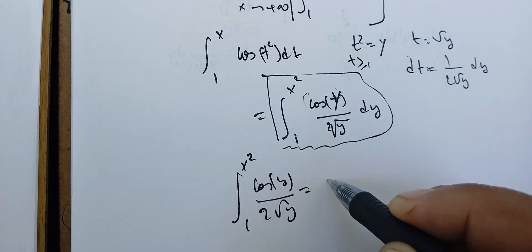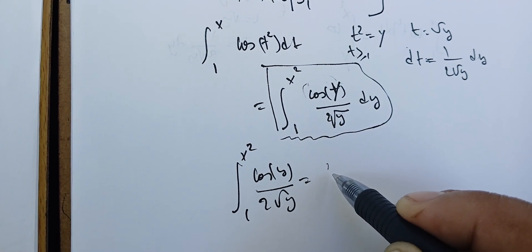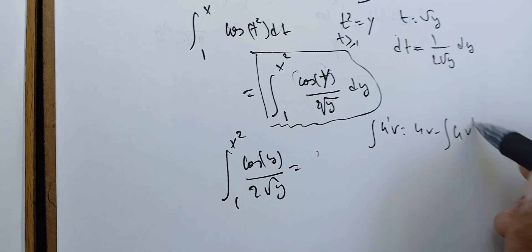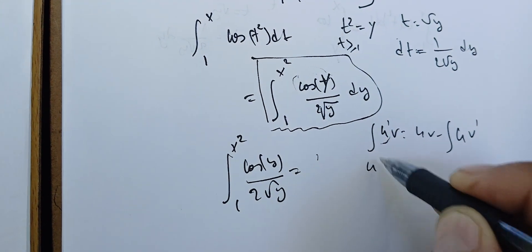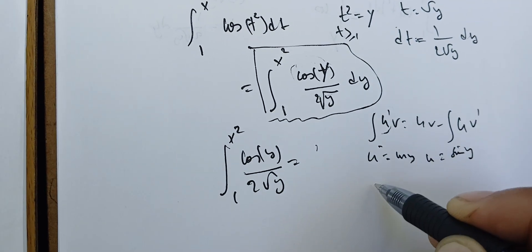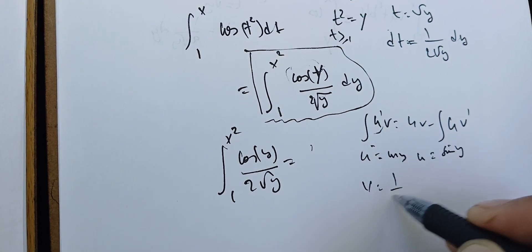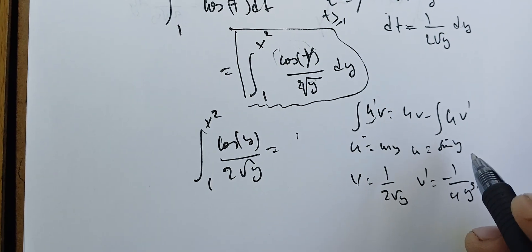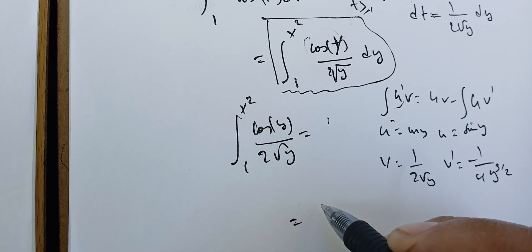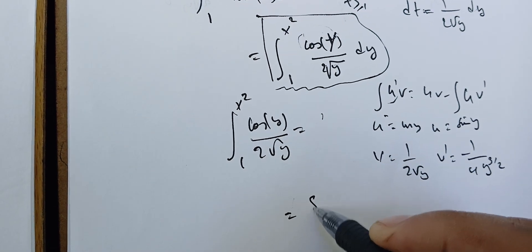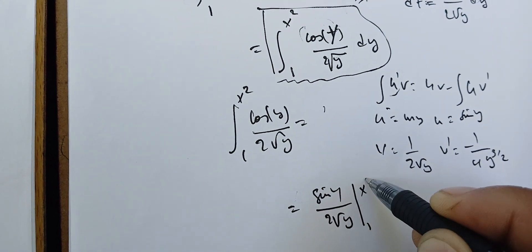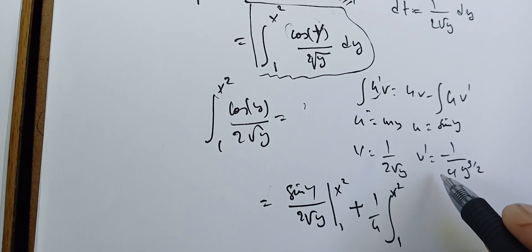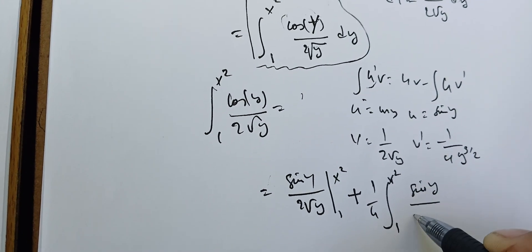Using integration by parts with the formula uv' = uv − ∫u'v: we let u' = cosine(y), so u = sine(y), and we let v = 1 over 2 square root of y, so v' = minus 1 over 4y^(3/2). Applying this, we get sine(y) over 2 square root of y evaluated from 1 to x squared, plus 1 over 4 times the integral from 1 to x squared of sine(y) over y^(3/2) dy.